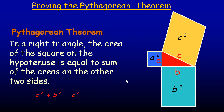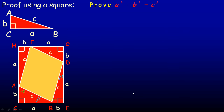So it looks like this — we often write A squared plus B squared equals C squared. Now we're going to take a look at a proof of this. We're going to prove that A squared plus B squared equals C squared.